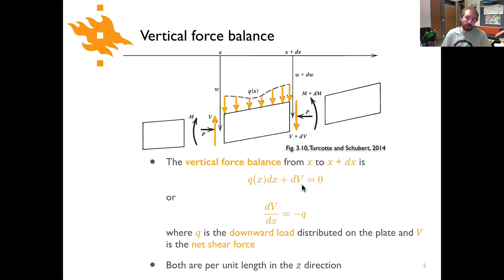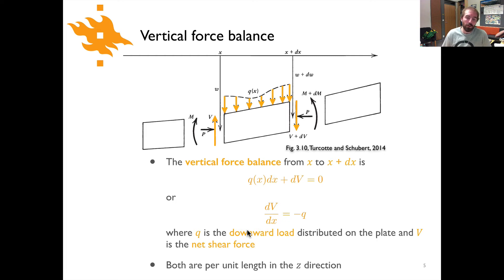Rearranging, we get dV/dx = −Q. Here Q is a downward load, V is the net shear force, and both values are per unit length along the z-direction (in and out of the plane of the screen).